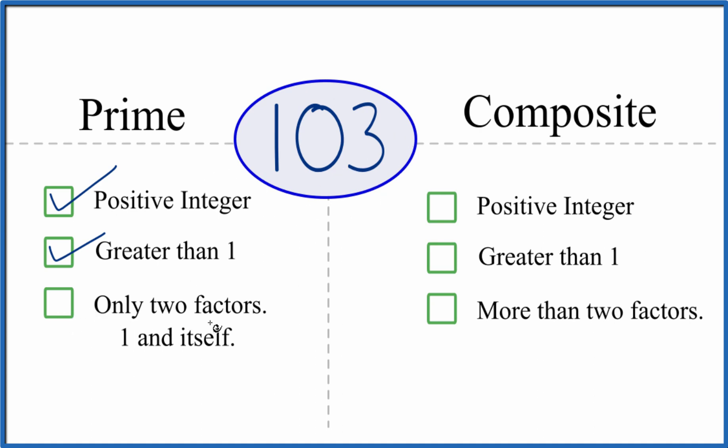And are there only two factors, 1 and itself? So 1 and 103 that go into 103. We know 1 times 103. There are two factors here. But are there any more?